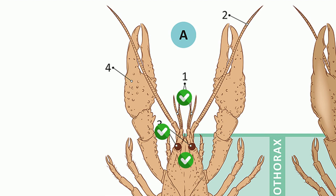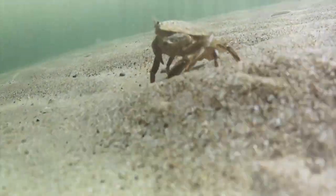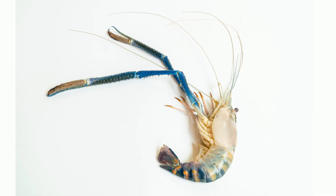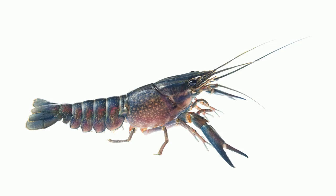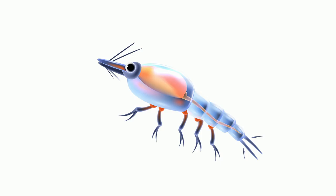On the abdomen, they have swimmerets, which are called swimming legs. Some common examples of crustaceans are crabs, lobsters, prawn, copepod, crayfish, fiddler crabs, and krill.